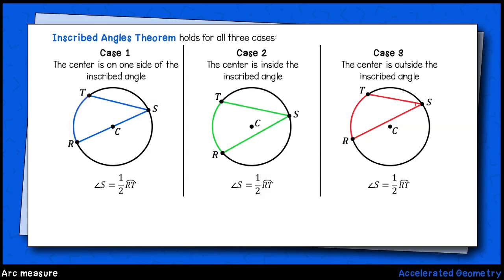This property holds for all possible cases. When that inscribed angle passes through the center of the circle, when the center of the circle rests inside the inscribed angle, and when the center of the circle rests outside the inscribed angle.